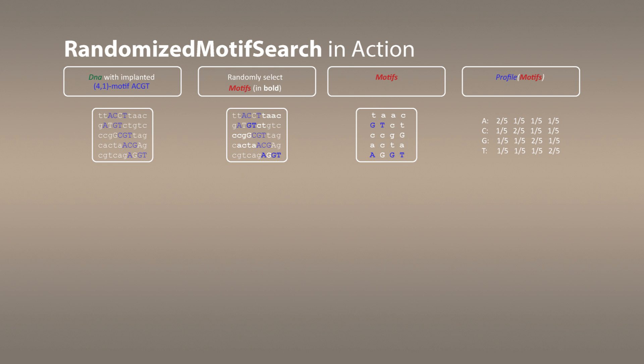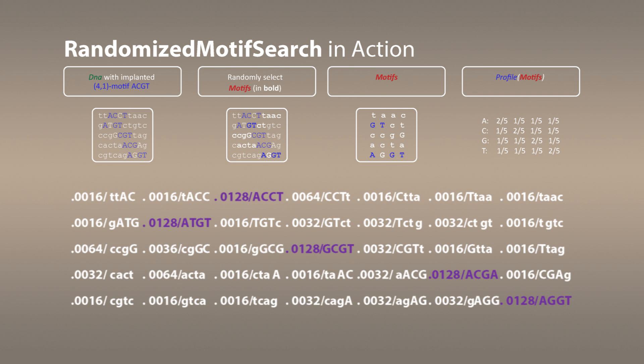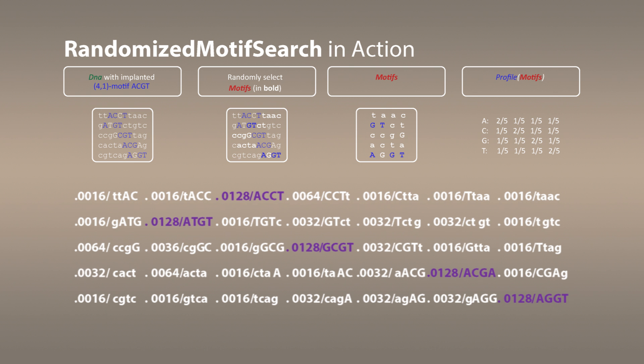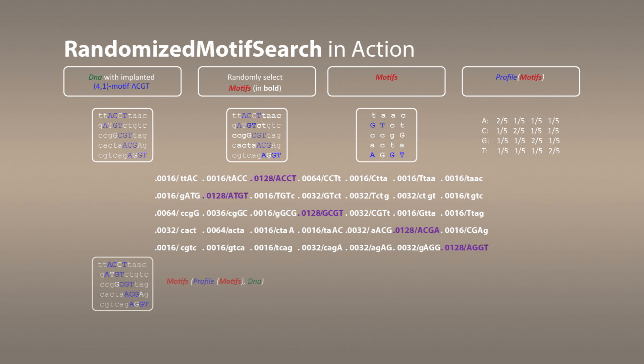Afterwards it will construct profile of motifs. Using the profile of motifs, it will calculate the probability of every k-mer in the set of strings shown here and simply select the most probable k-mers in every string. The results are in this matrix and I should probably start iterating.